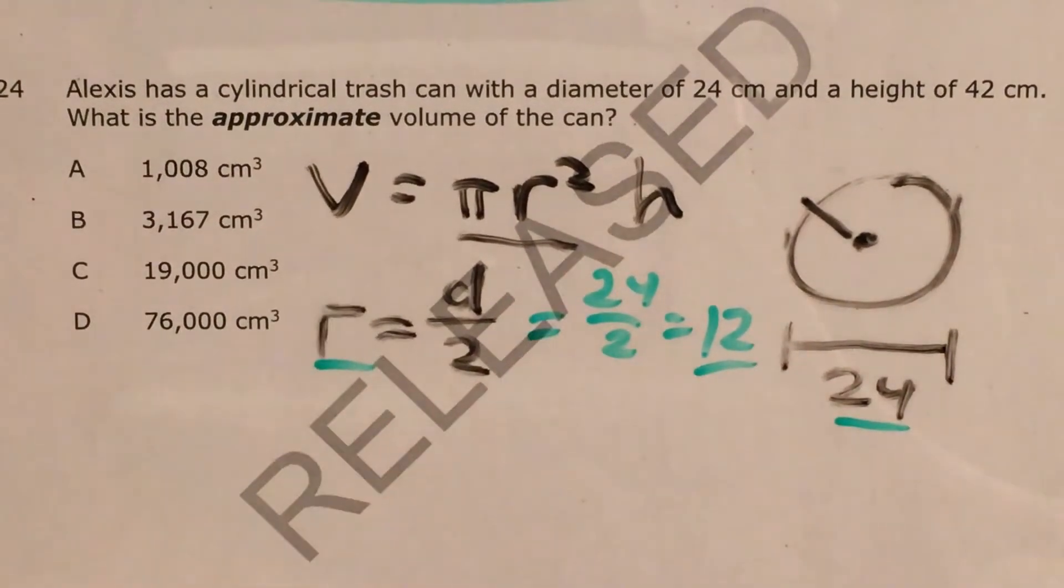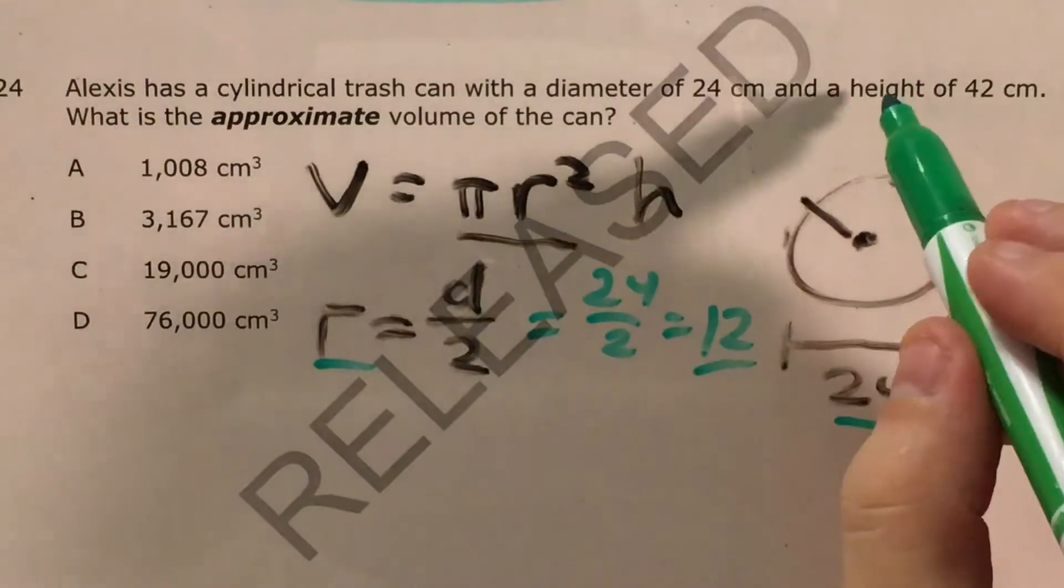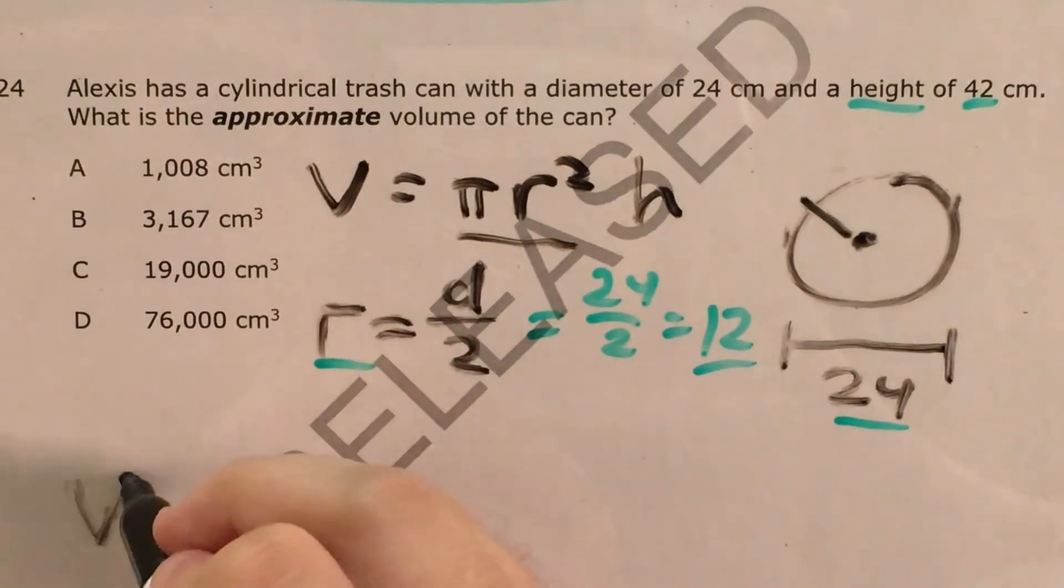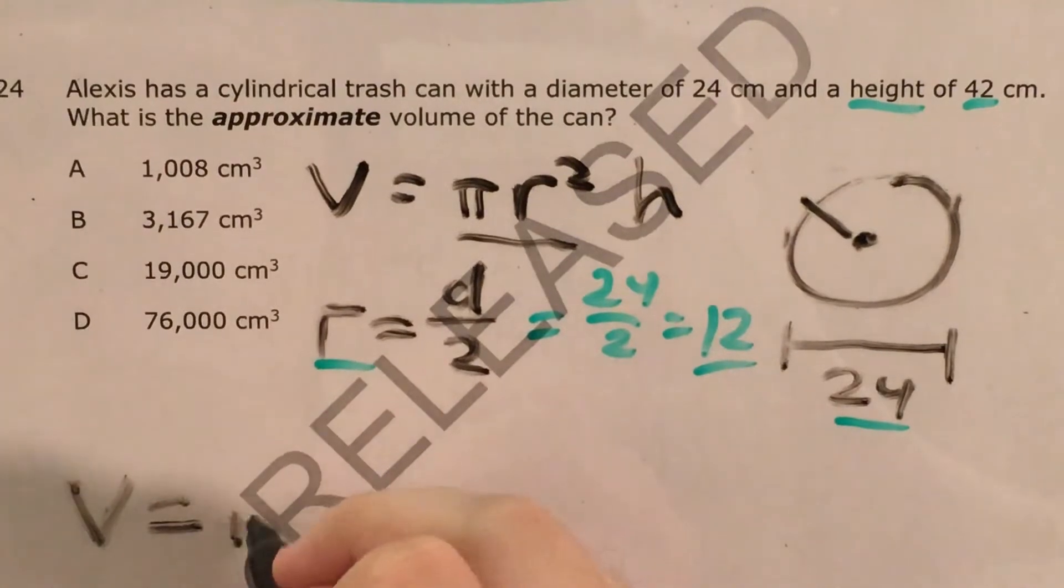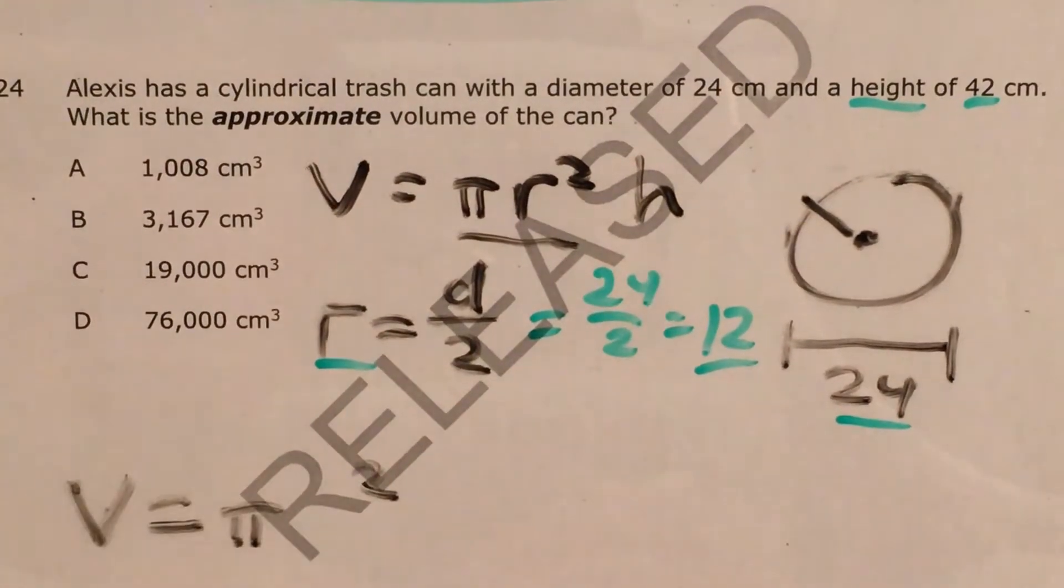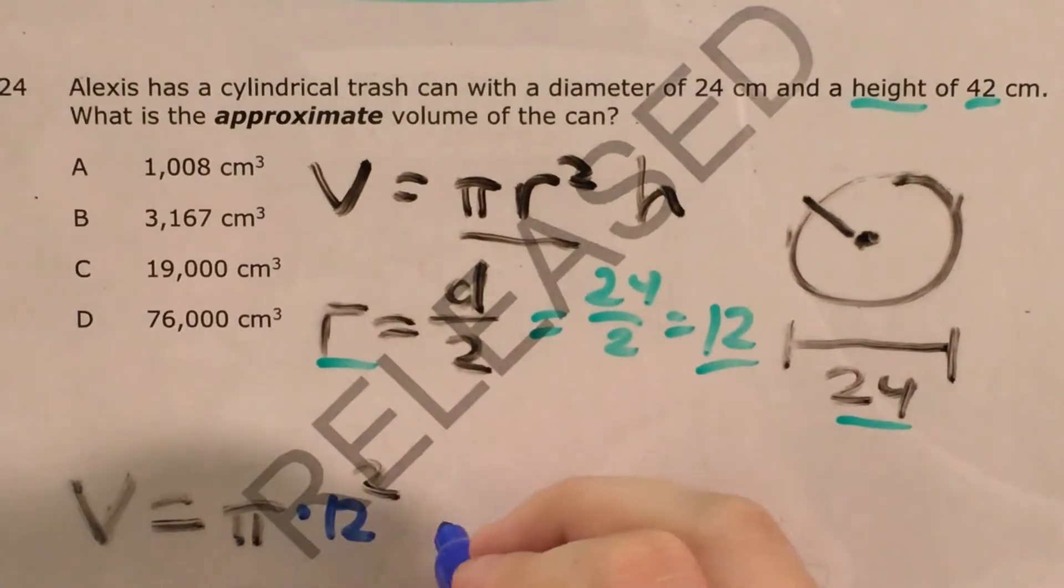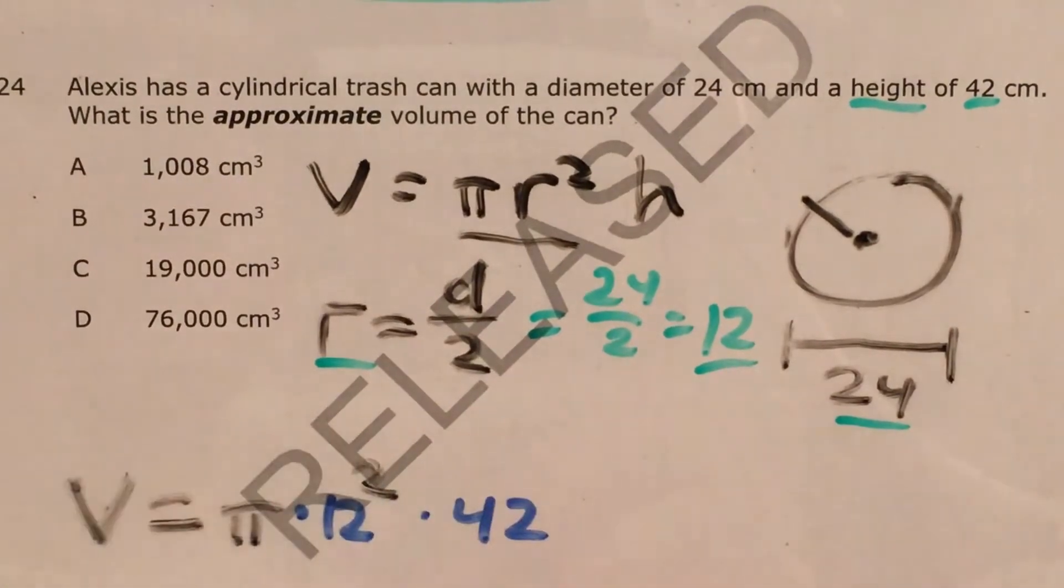So let's go ahead and plug 12 in for the formula here. The problem also says that the height was 42 centimeters, so we can plug that in as well. So let's use that same formula and say that volume equals pi times 12 squared times 42.